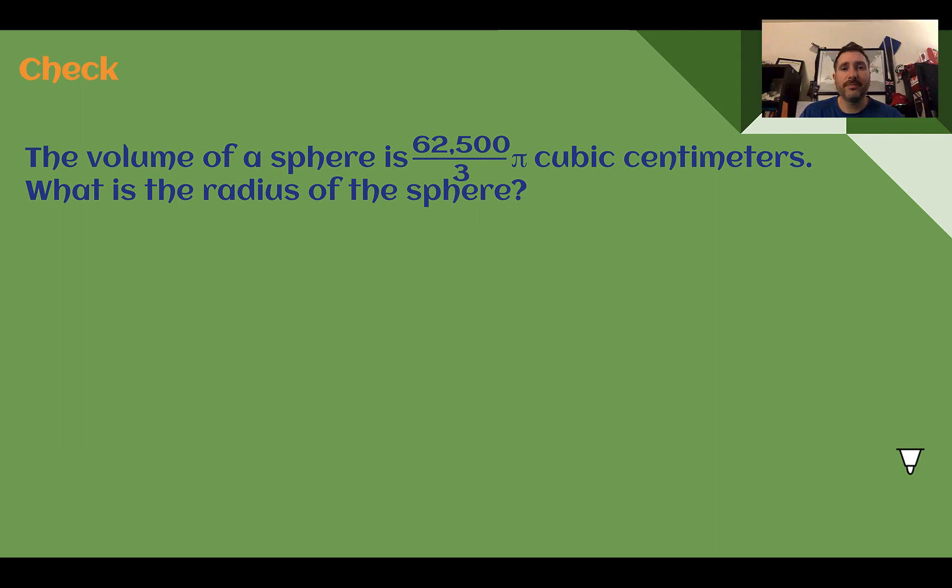Check your answer. You should have found that the radius here is 25 centimeters. So I'm just going to plug in my volume since we're going to figure it out anyway. So 62,500 thirds pi was my volume. That is equal to 4 thirds pi times the radius cubed.